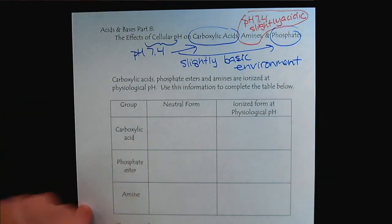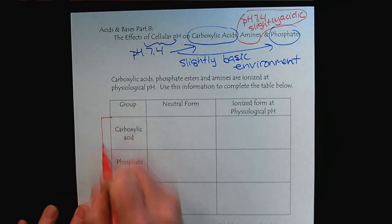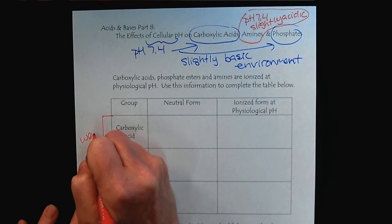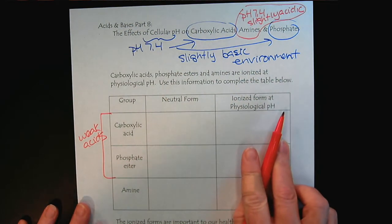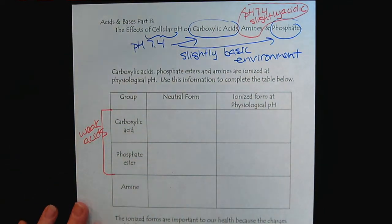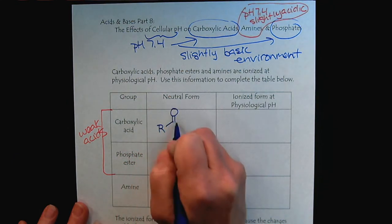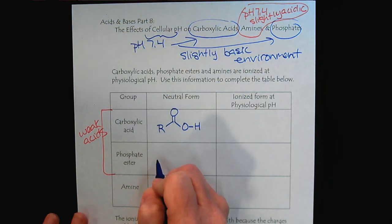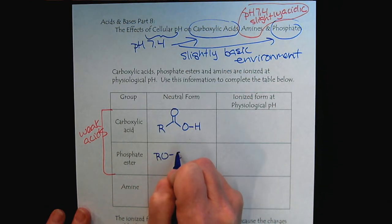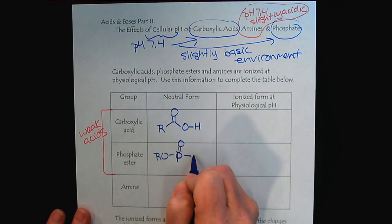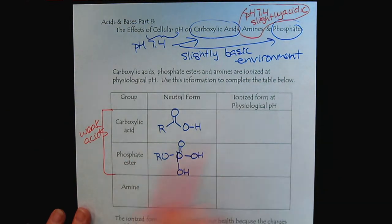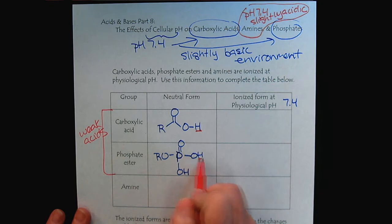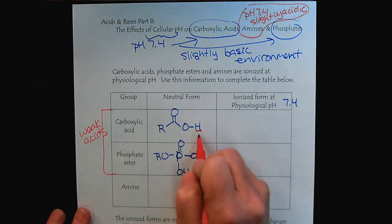First we'll focus on the carboxylic acids and the esters. These are weak acids. So pH 7.4 is slightly basic for them. We've learned about our carboxylic acids having this form here, and our phosphate esters are here. Because these are weak acids and physiological pH 7.4 is slightly basic, the carboxylic acids and the phosphate esters lose these protons.